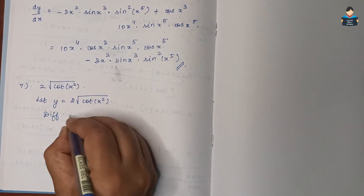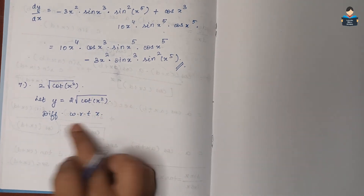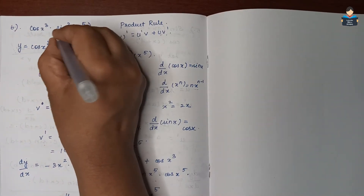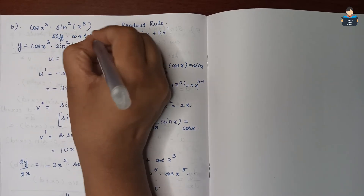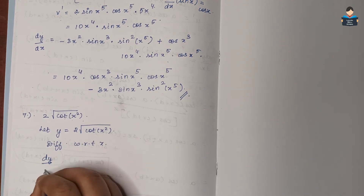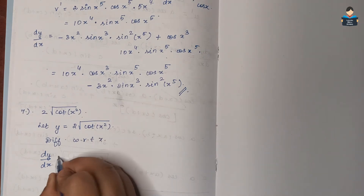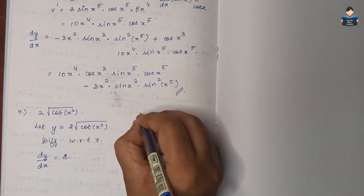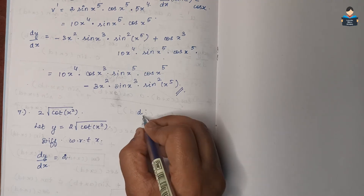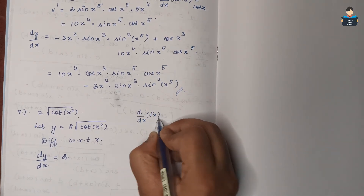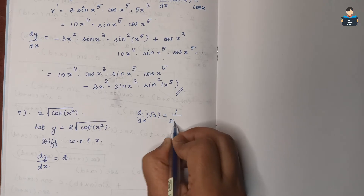We will do differentiation with respect to x. Since 2 is a constant, dy/dx equals 2 times the derivative of √(cot(x²)). To differentiate the square root, we use the formula: d/dx of √x equals 1/(2√x), which comes from x^(1/2) giving (1/2)·x^(-1/2).